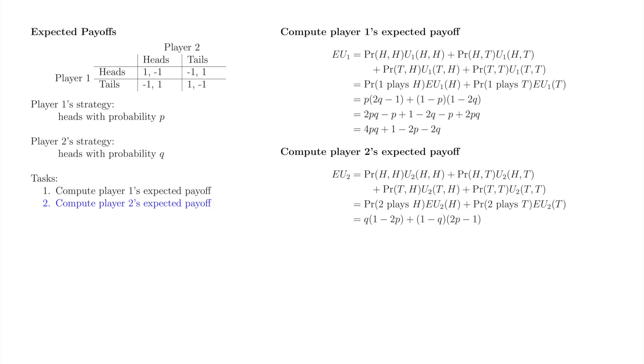The probability player two plays heads is q and the probability that she plays tails is 1-q. As we determined earlier, EU2 of h is 1-2p and EU2 of t is 2p-1.